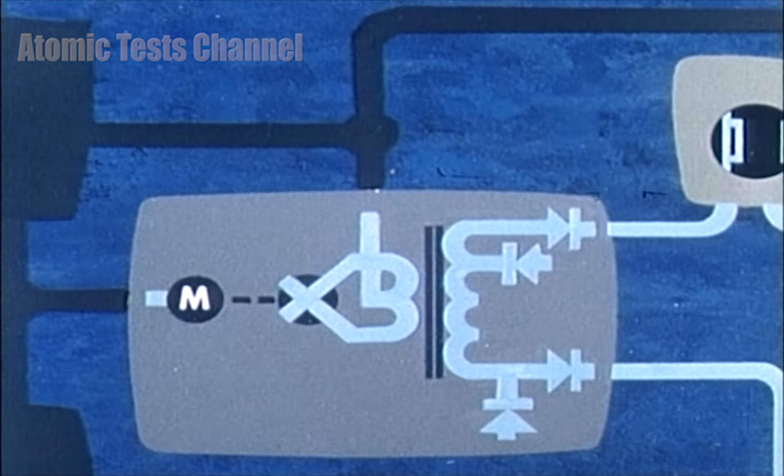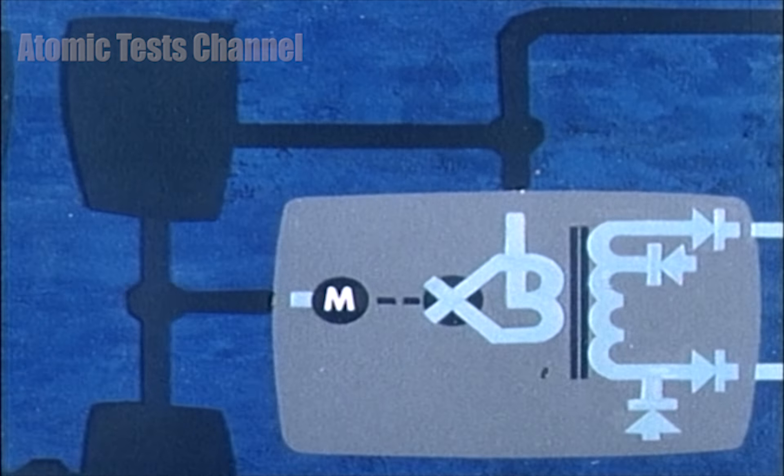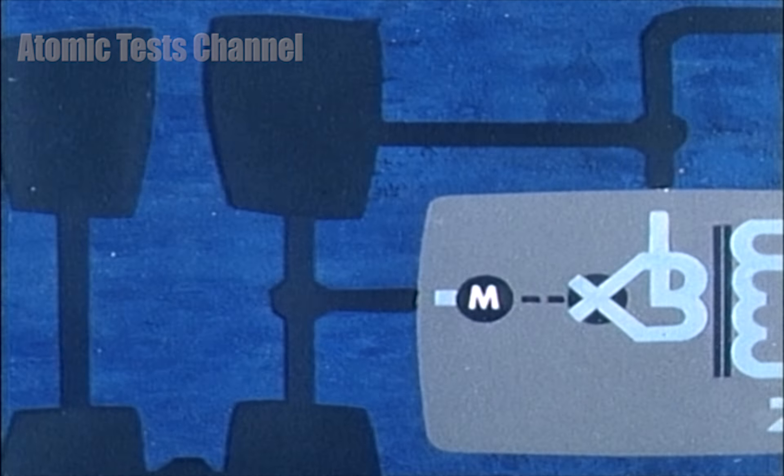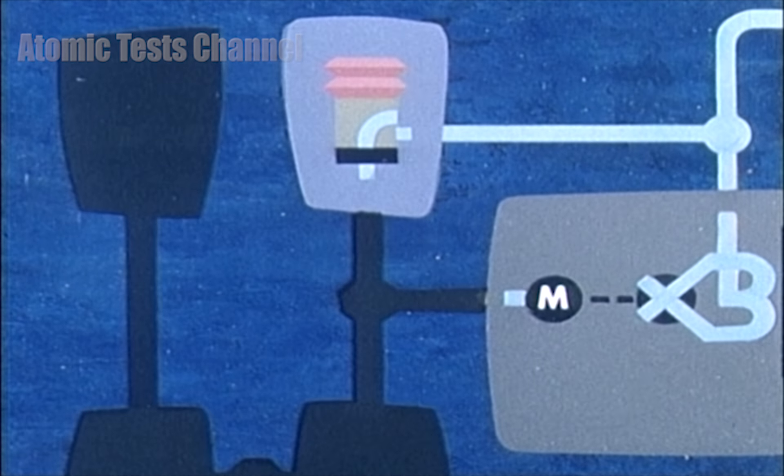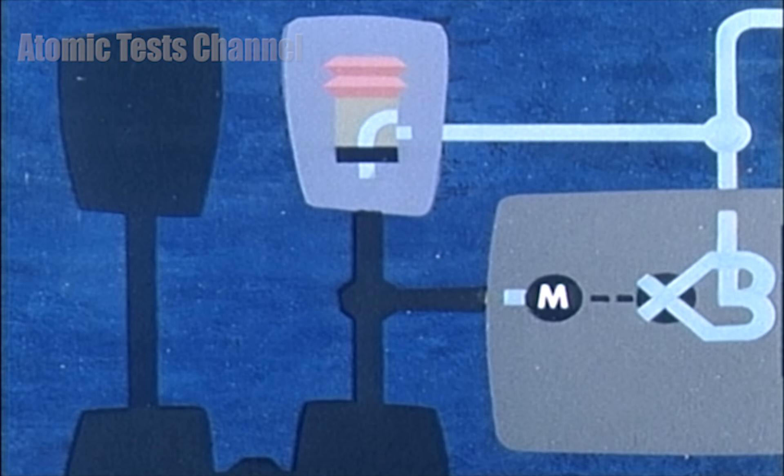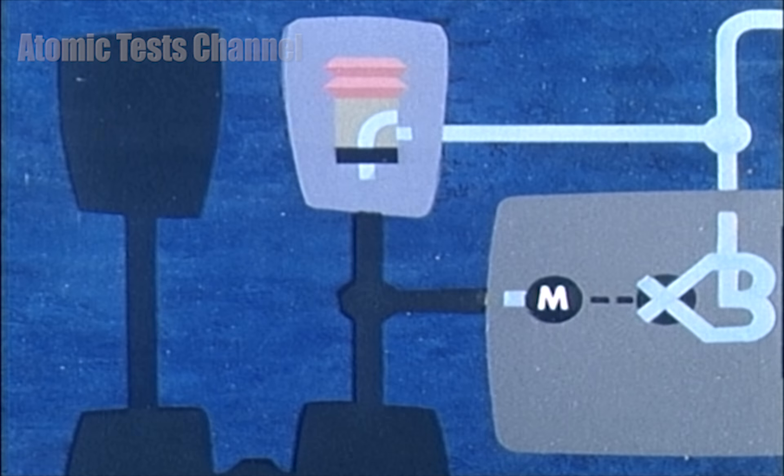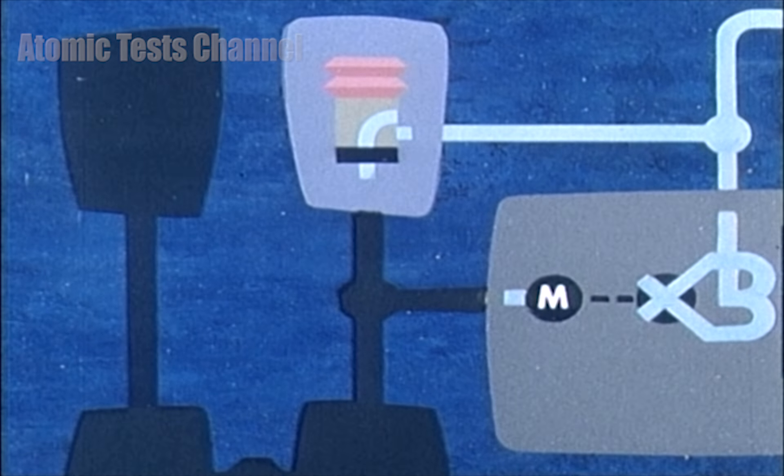The electrical circuits which fire the detonators are maintained in a safe condition until the appropriate time by environmental sensing devices, or ESDs. There are several different ESDs used in weapon systems.